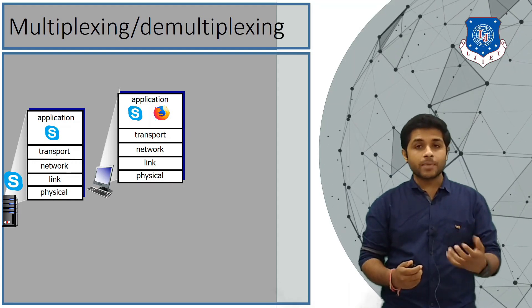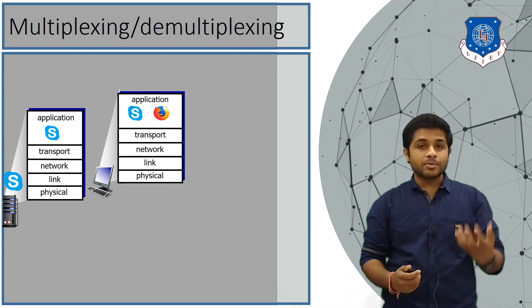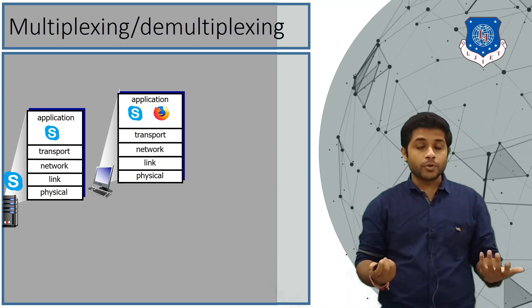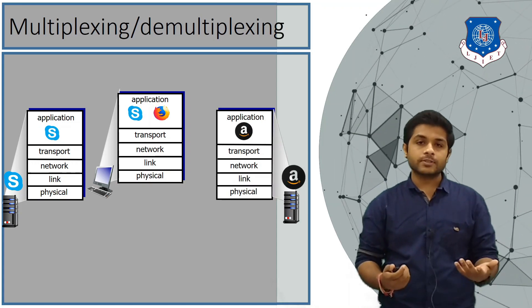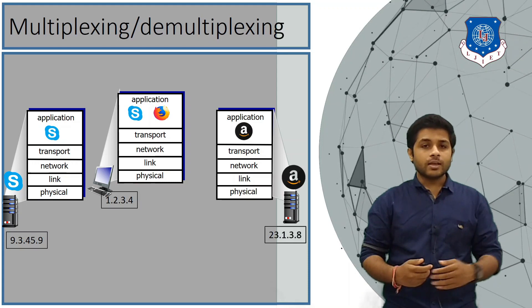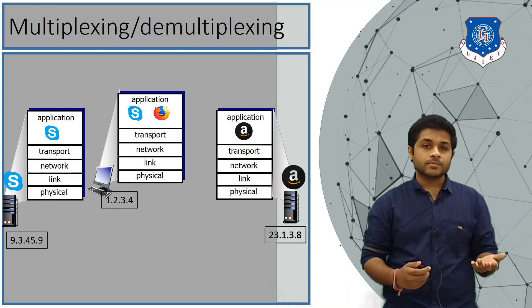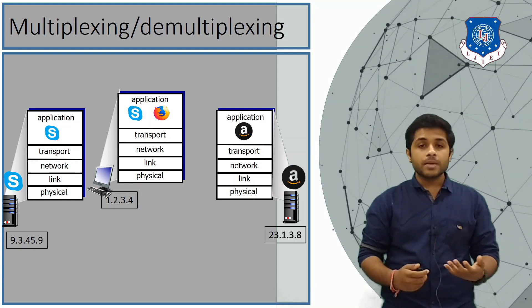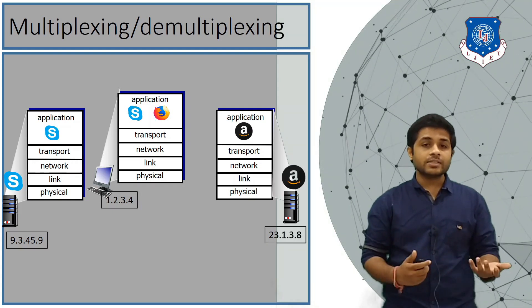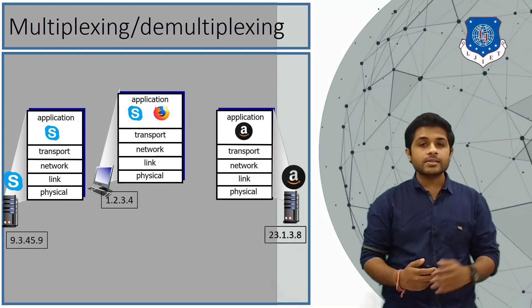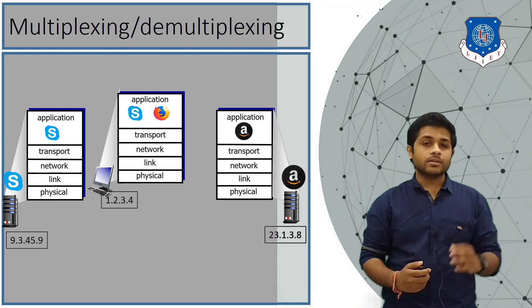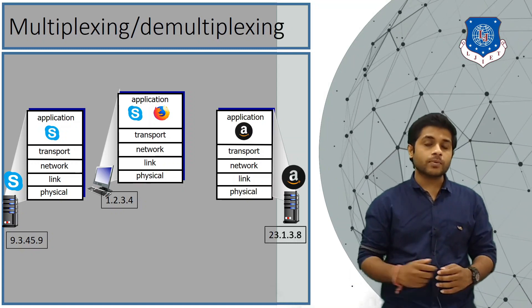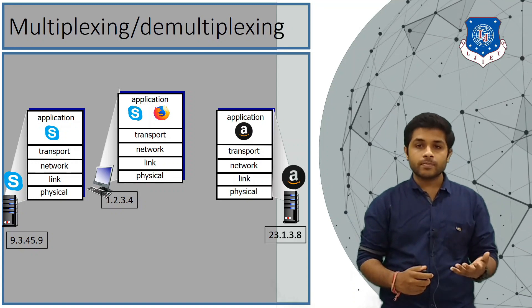Amazon also has its own servers, far away from you, and those servers also have these five layers. In the internet, it is necessary for all devices to have a unique IP address, because without an IP address devices cannot talk to each other. So the IP address of your device is 1.2.3.4, the Skype server's IP is 9.3.45.9, and the Amazon server's IP is 23.1.3.8.